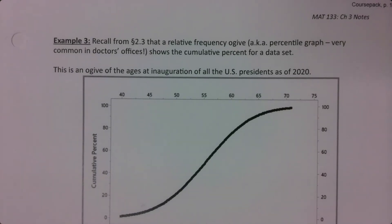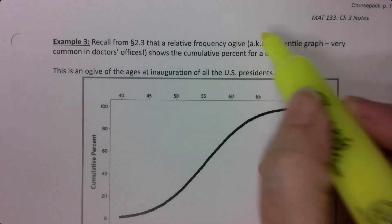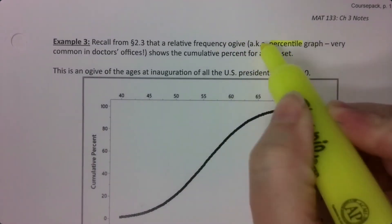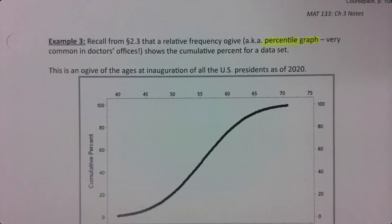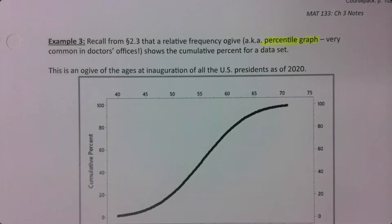Remember from section 2.3 that we learned a relative frequency ogive was called a percentile graph. I warned you at the time that these have real value, and now we're seeing that value. These are very common in doctors' offices and on test result scores when you get them back, like with the SATs and things like that.